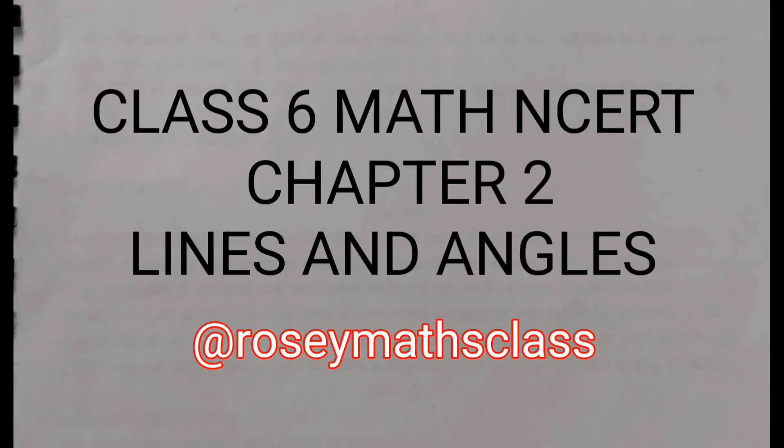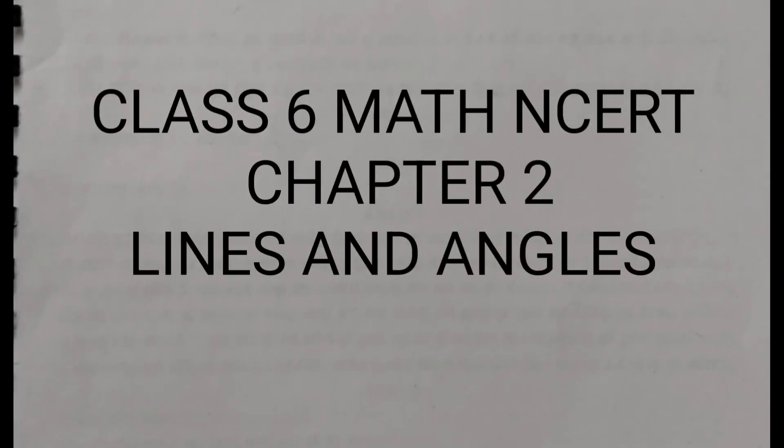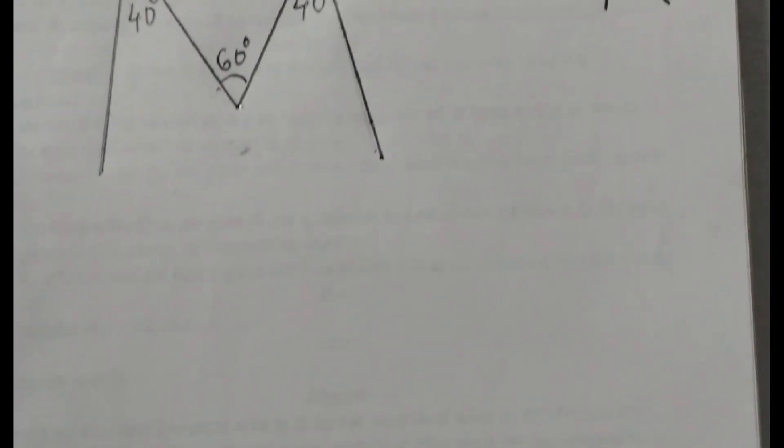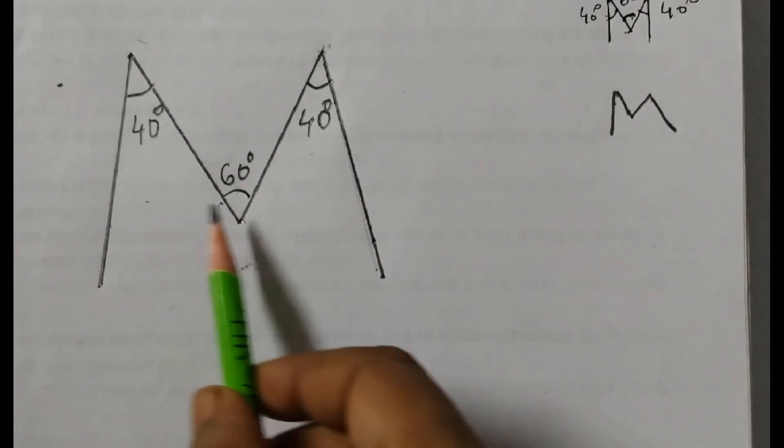Hello students! Welcome back to Rosie Maths class. In this video we are going to figure it out from chapter number 2, lines and angles. In our previous video we did question number 4 which is drawing the letter M. This is letter M with angles 40, 60, 40.